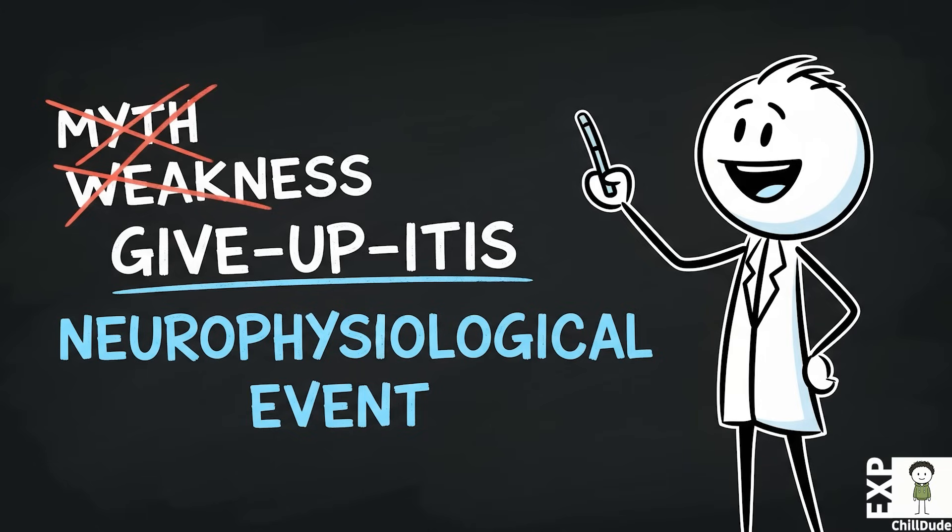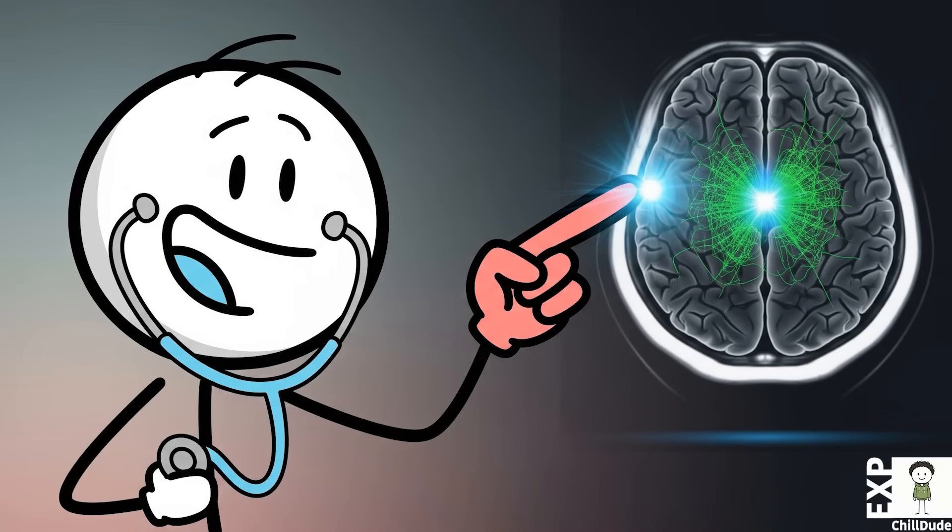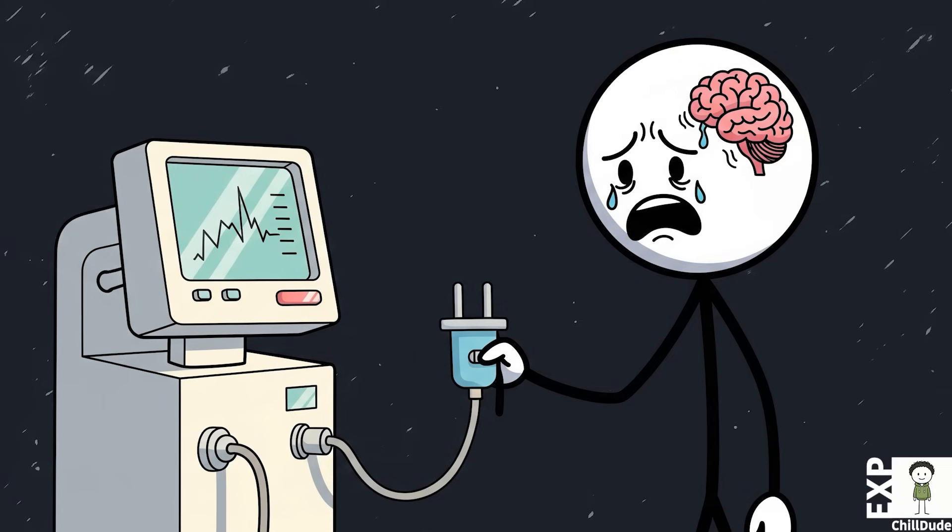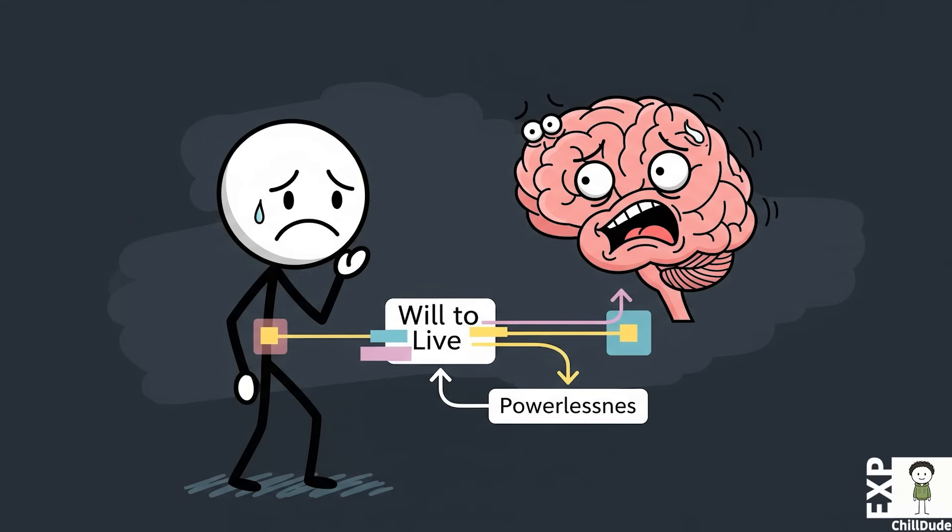Conclusion. Give-up-itis, or psychogenic death, is not a myth, nor is it a sign of moral or spiritual weakness. It is a tangible, observable neurophysiological event. It is the final, tragic outcome of a brain that has been convinced of its own powerlessness, leading to the shutdown of the very neurological systems that generate our will to live.